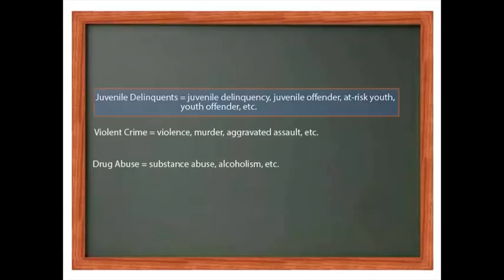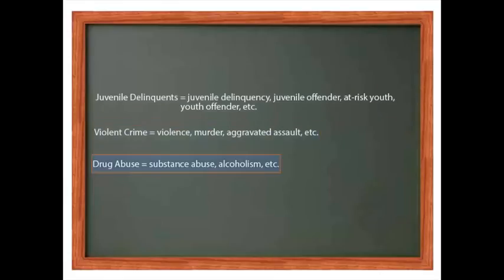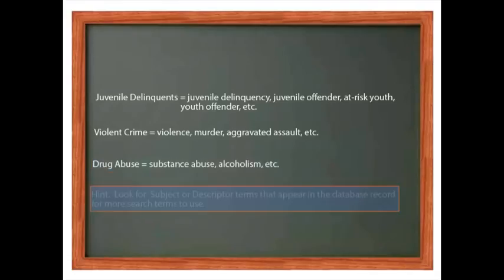It is also recommended to find synonyms and alternative ways of stating your main concepts. For example, for juvenile delinquents you can use juvenile delinquency, juvenile offender, at-risk youth, or youth offender. For violent crimes you can use violence, murder, or assault. For drug abuse you can use substance abuse, alcoholism, or others. Look for subject or descriptive terms that appear in the database records for more search terms to use.